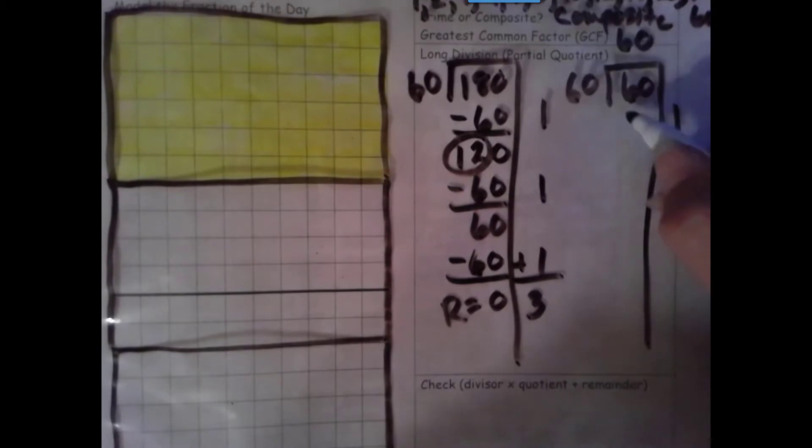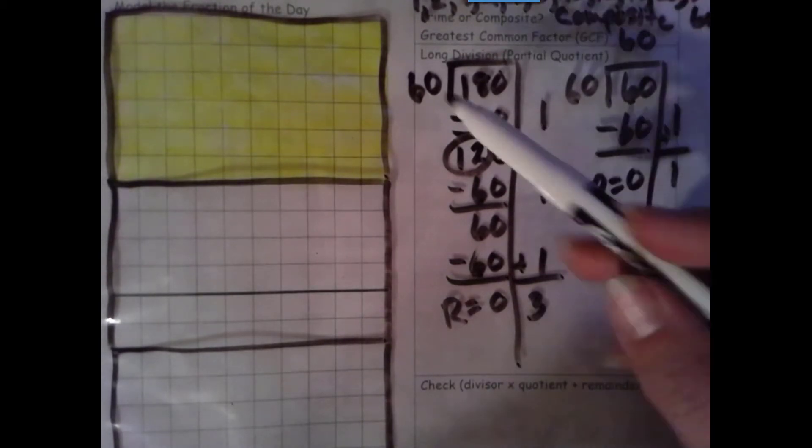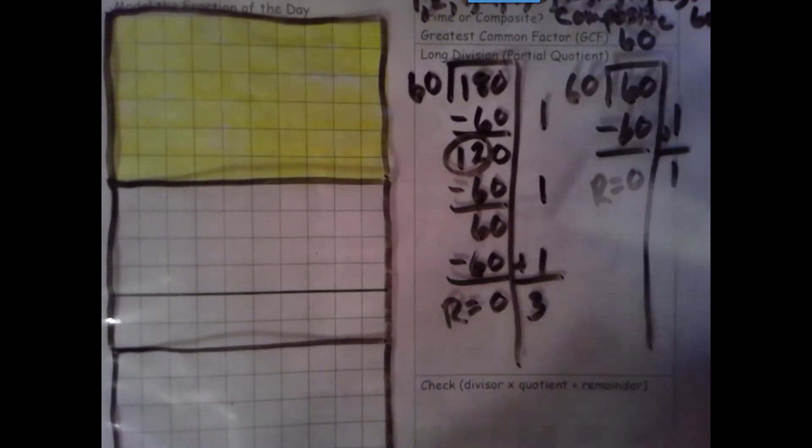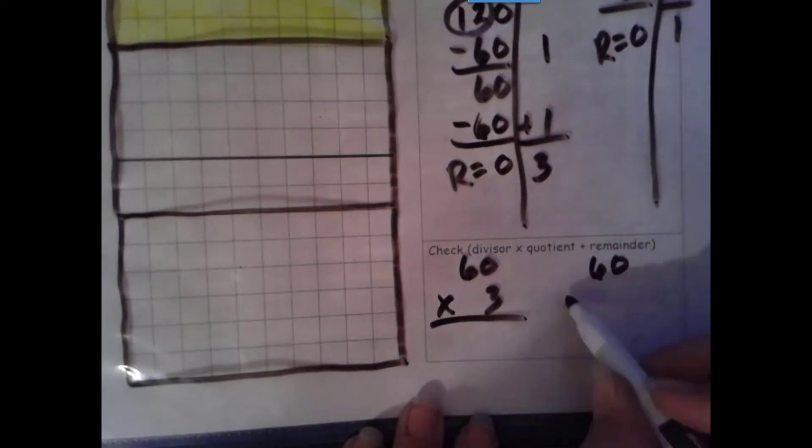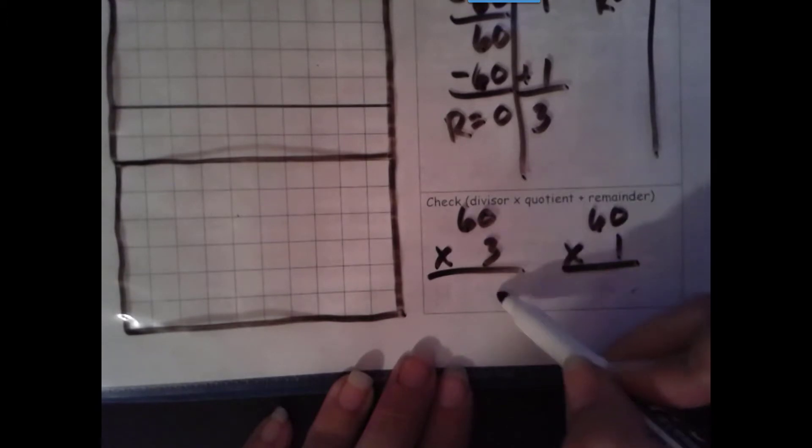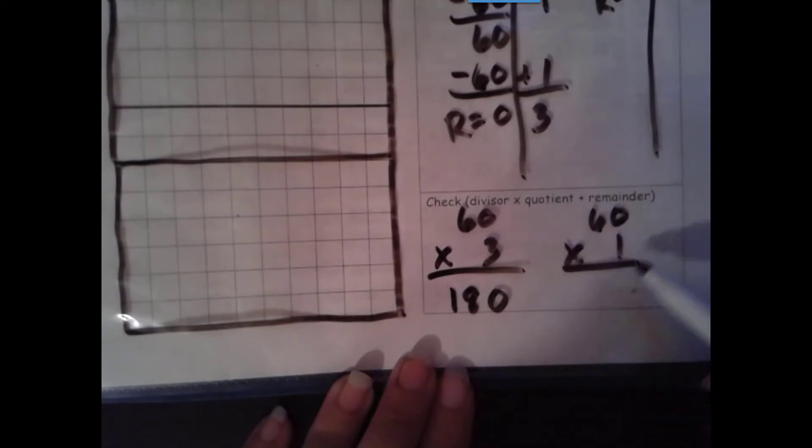And over here, 1 times 60 is 60. Number's the same, zeroes the game. Now we need to check divisor times quotient plus remainder. Since our remainder for both is zero, and the identity property of addition says when you add zero it stays the same, I don't need to actually add zero. So let's go ahead and multiply. Three groups of zero, three groups of six tens is 18 tens. And here we have the identity property of multiplication, which says when you multiply by one it stays the same.